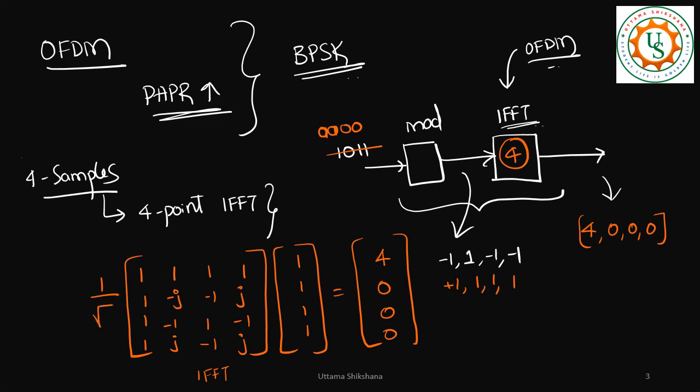If you want to write the actual OFDM equation, then it will be like one by square root of four, which is one by square root of n as per the equation. So one by square root of four.